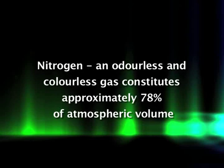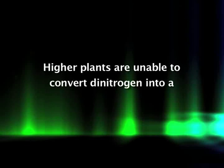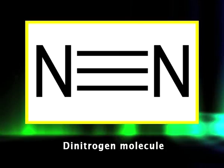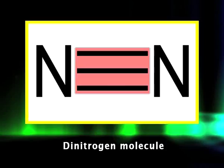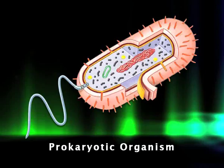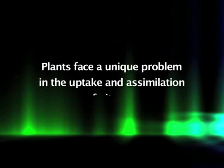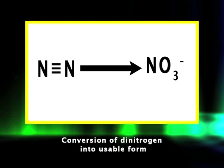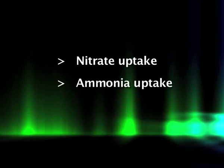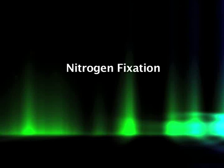The bulk of the atmosphere — 78 percent by volume — consists of molecular nitrogen, an odorless and colorless gas. In spite of its abundance, higher plants are unable to convert dinitrogen into a biologically useful form. The two nitrogen atoms in dinitrogen are joined by an exceptionally stable triple covalent bond, and plants do not have the enzyme to reduce it. Only certain prokaryotic species are able to carry out this important reaction. Plants thus depend on prokaryotic organisms to convert atmospheric dinitrogen into a usable form.